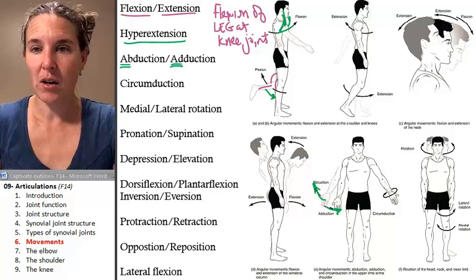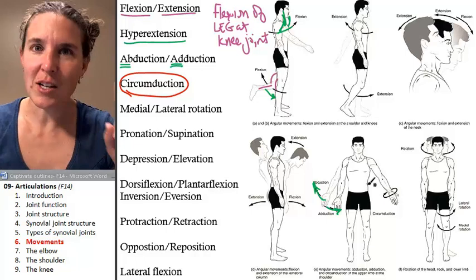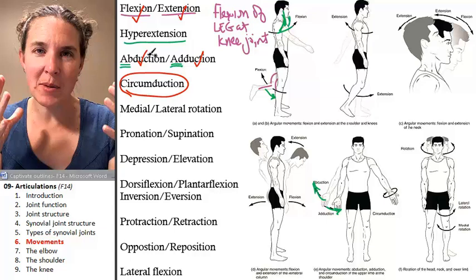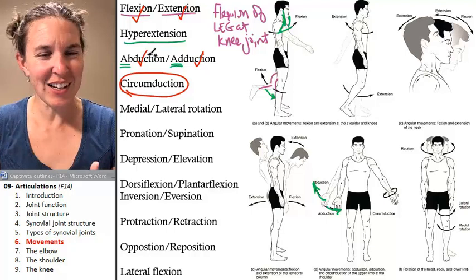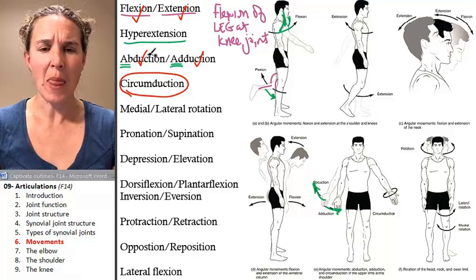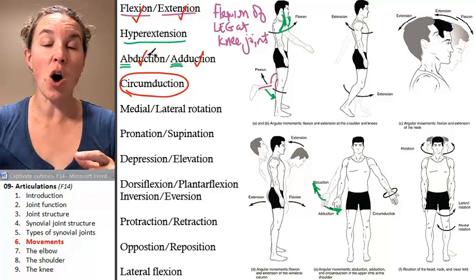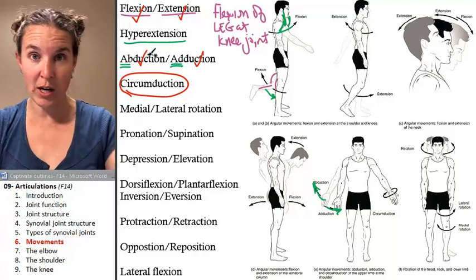Circumduction is flexion, extension, adduction, and abduction all in some combination — happening together. If you combine all of those things, you can get a circular motion. One student worked out a mathematical explanation of circumduction and what point we had abduction, adduction, extension, and flexion happening — and it was really cool.